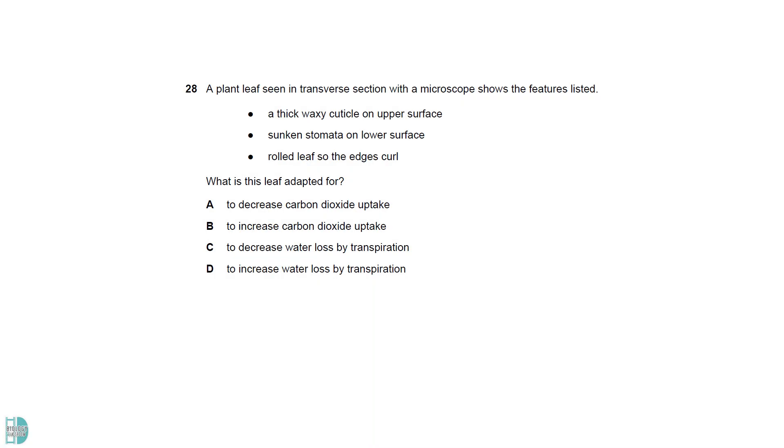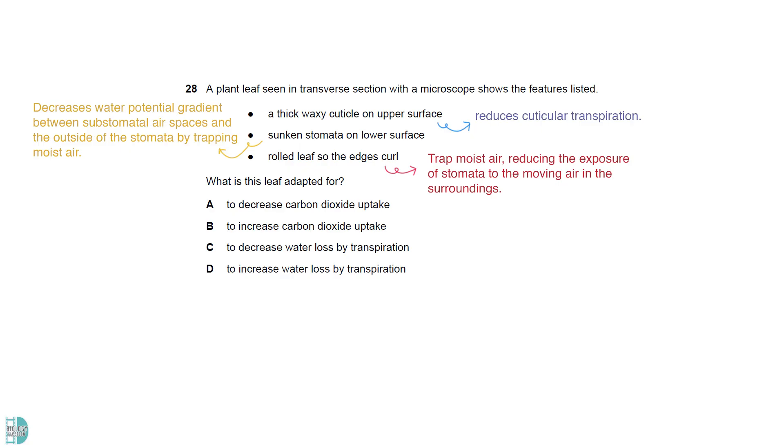A thick waxy cuticle can reduce the cuticular transpiration. Sunken stomata decrease the water potential gradient between the sub-stomatal airspaces and the outside of the stomata by trapping moist air. A rolled leaf can also trap moist air, reducing the exposure of stomata to the moving air in the surroundings. All the features decrease water loss by transpiration.